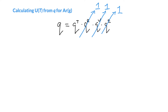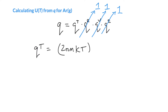We can go ahead and calculate the translational partition function. We've seen the expression before: Q_t is equal to (2π × mass × k_B × T) to the 3/2 power, times the volume, all divided by Planck's constant cubed.